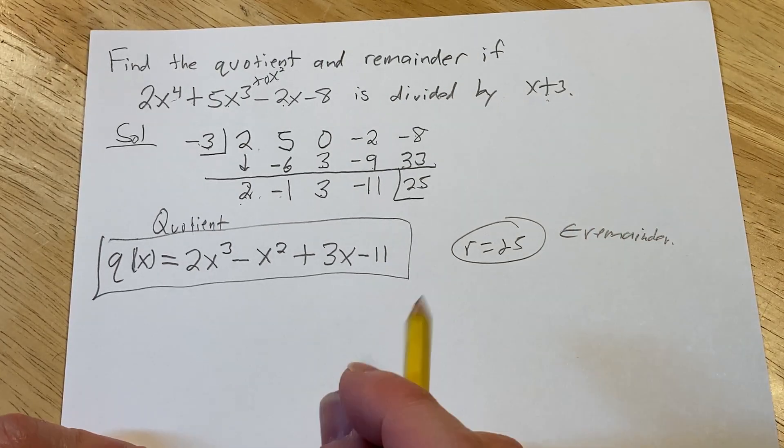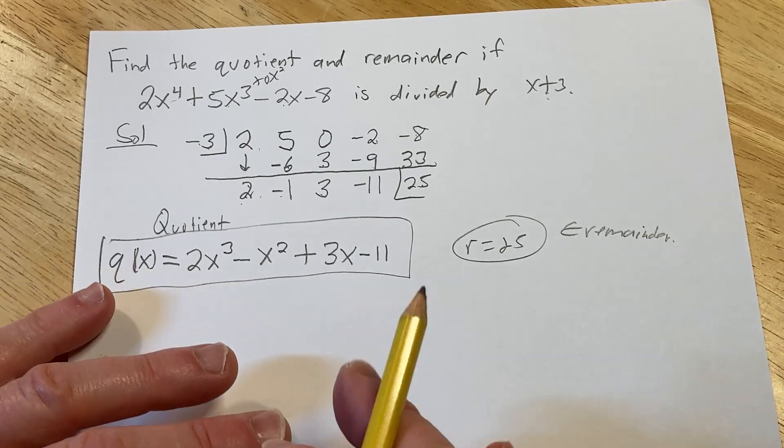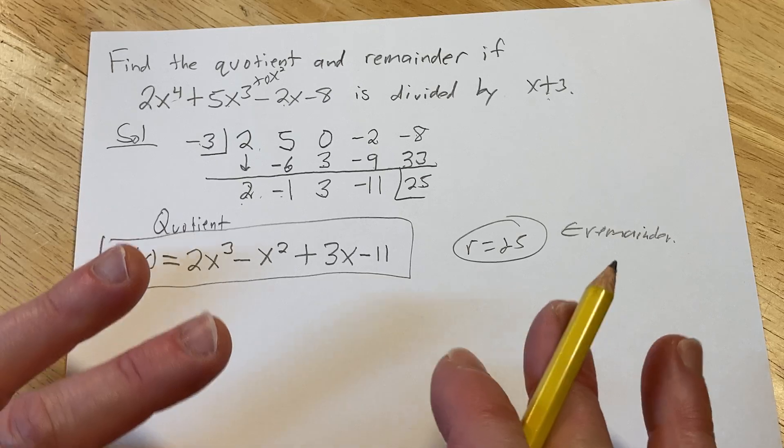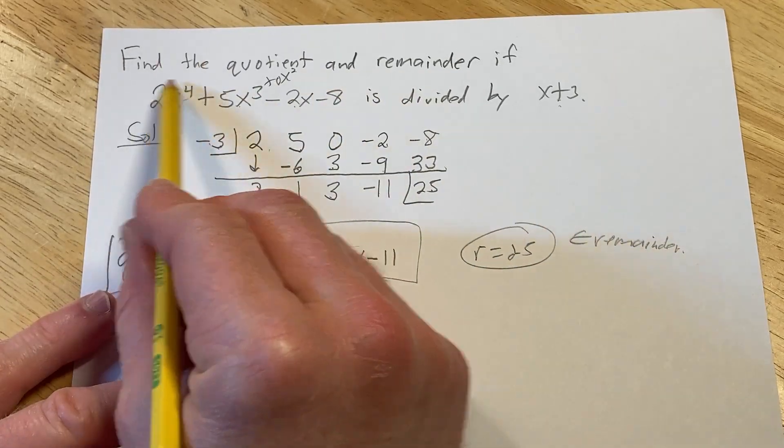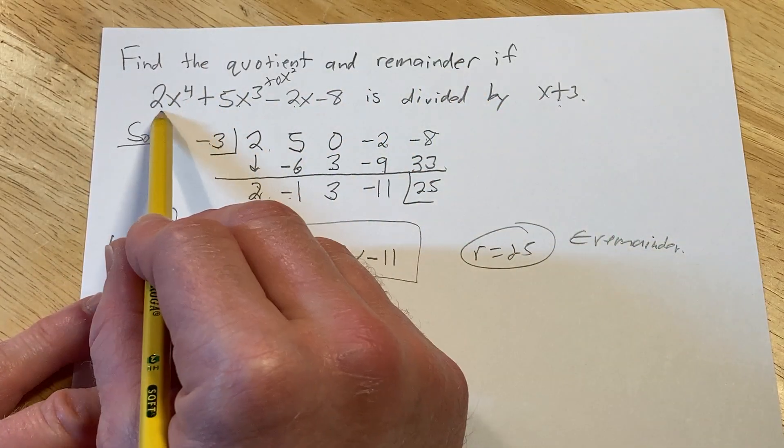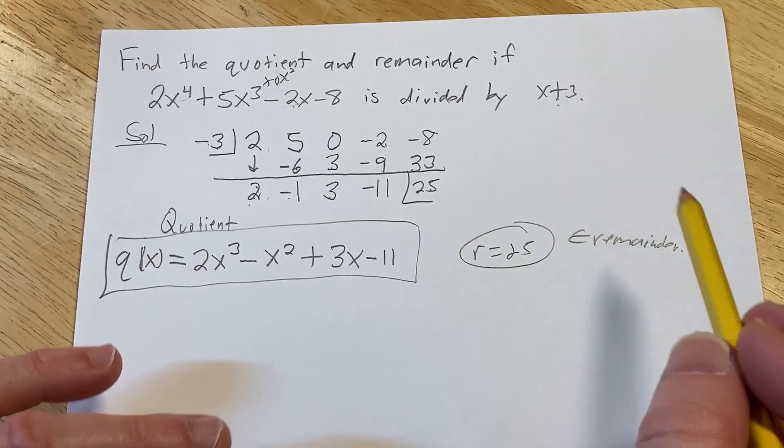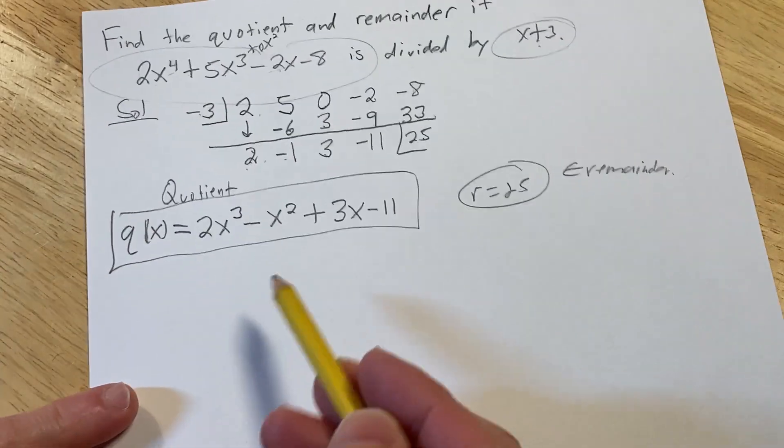Let me show you what this is actually for, because I think that sometimes people don't know. So it didn't ask us for this, but let me just show you something really powerful. So we have the quotient and the remainder if this is divided by x plus 3. We have the answer to the question. So what is the purpose of this?